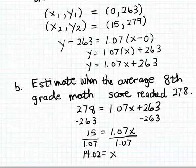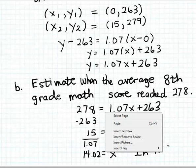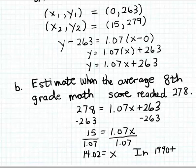So that tells us that the score on this math test reached 278 about 14 elapsed years after 1990, since x represents elapsed years after 1990. So the answer to our question is that the math score reached 278 in 1990 plus 14, which equals 2004. So it was in the year 2004 when the math score reached that average of 278.